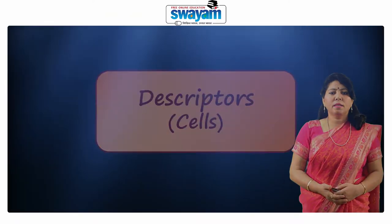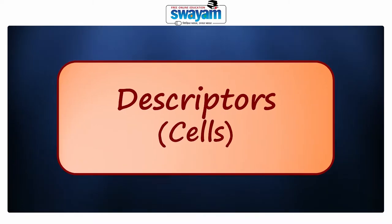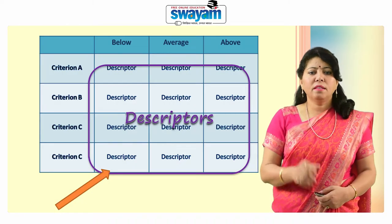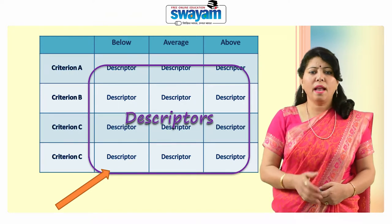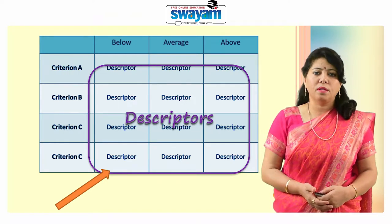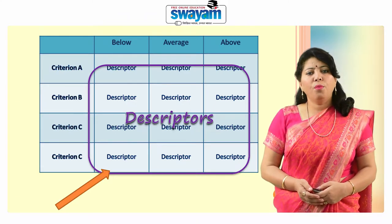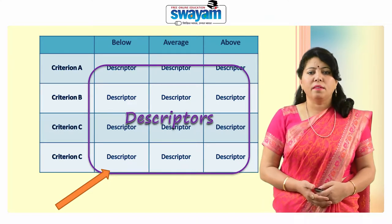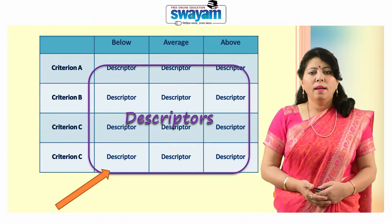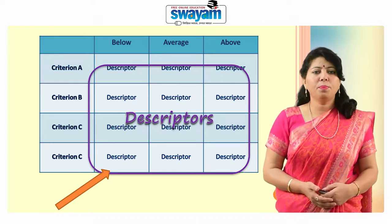The next component is descriptors. Descriptors are the fields, boxes, or cells in the rubric where levels and criteria intersect. These boxes are also called level descriptors or success descriptors. A descriptor is a description of student success on a criterion at a specific level, specifying the meaning of each criterion and describing the level of performance.